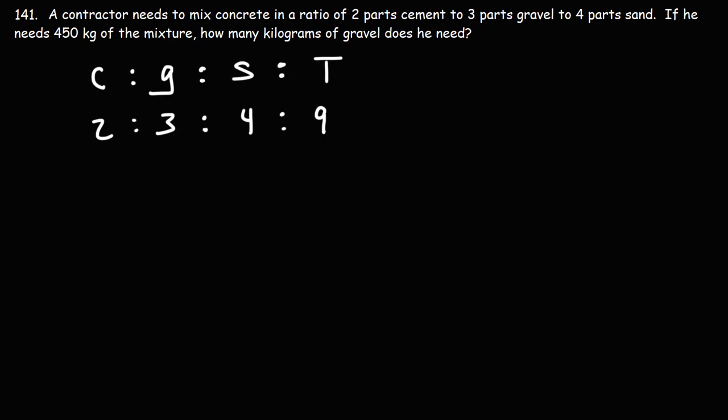Now the next row is going to be the ratio in kilograms. So the total kilograms of the mixture is 450. And our goal is to find G. So this is C, G, and S.